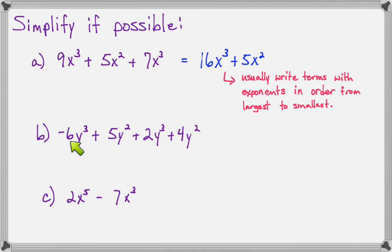Part B: -6y³ + 5y² + 2y³ + 4y². Again we have y³ and y². So we will combine the y³ terms. We'll have -6 and +2, together they make -4. So -6 + 2 makes -4, and those are y³. Then we'll have +5 and +4 makes 9, so that's 9y².